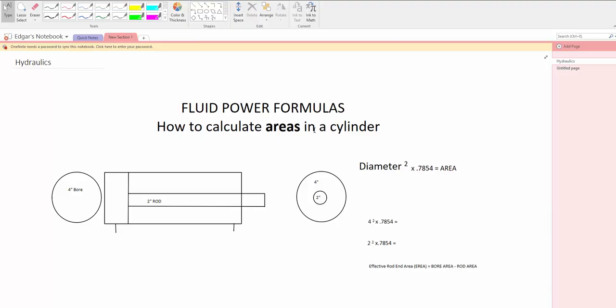We need the areas so that we can later on figure out forces that we are going to be working with. So the equation is very simple. It's diameter squared times 0.7854 equals area.